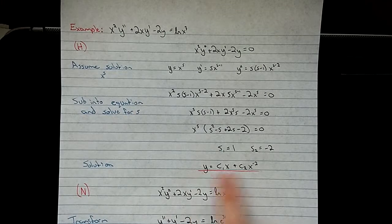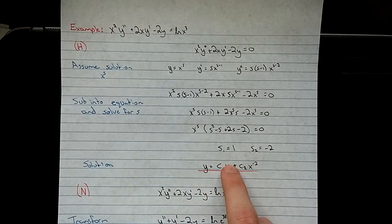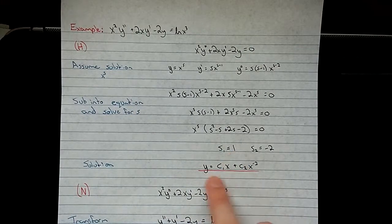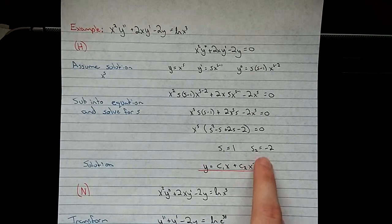So our homogeneous solution looks like this. You get c1 x to the power of s1, which is just 1 here, and c2 x to the power of s2.